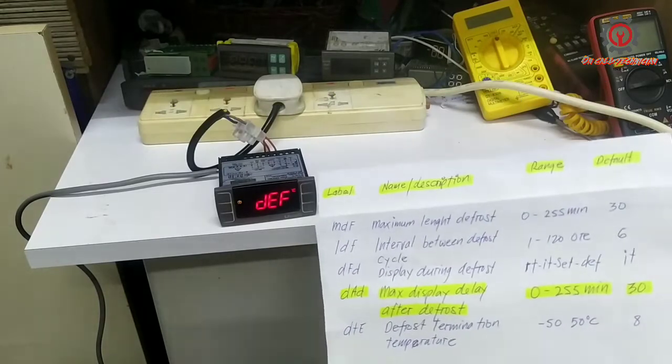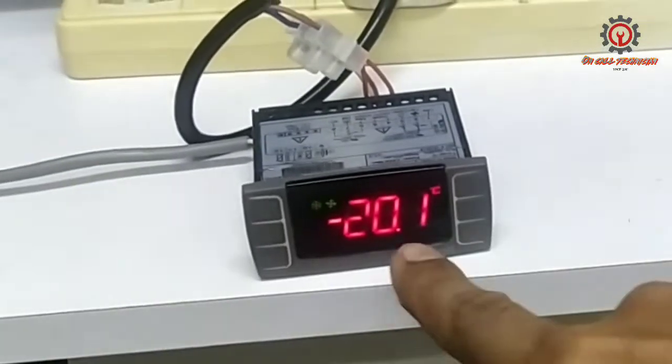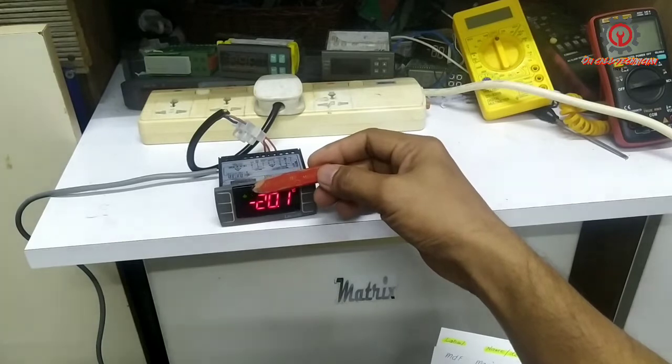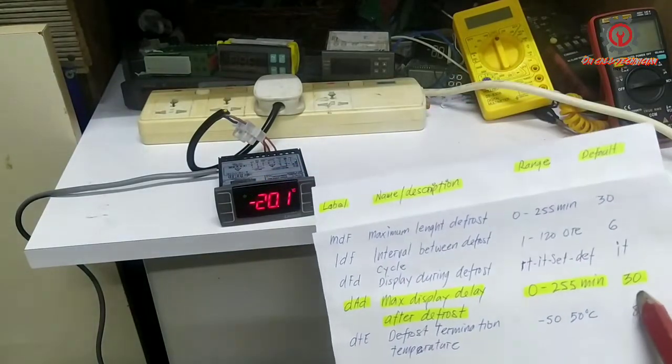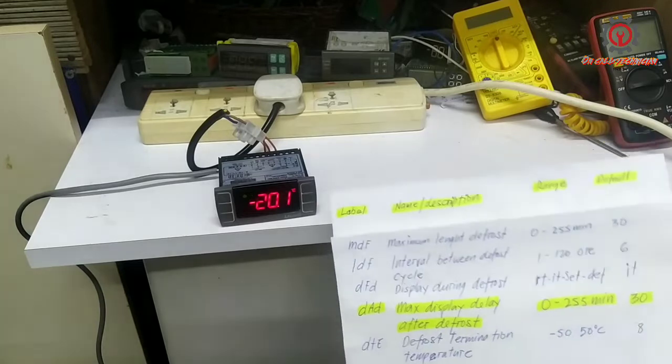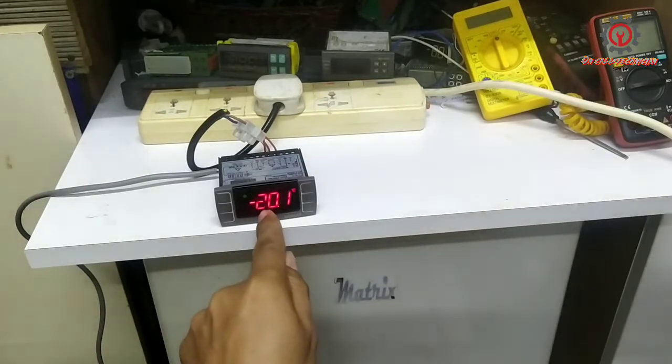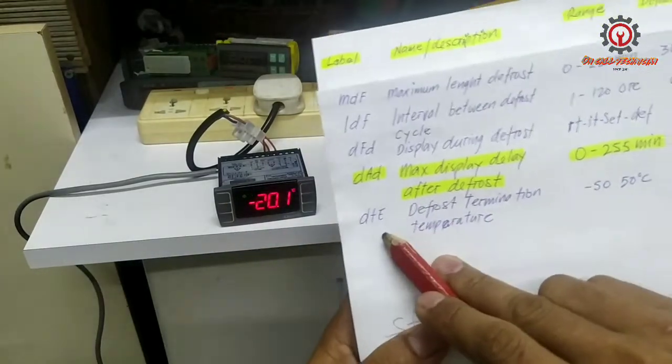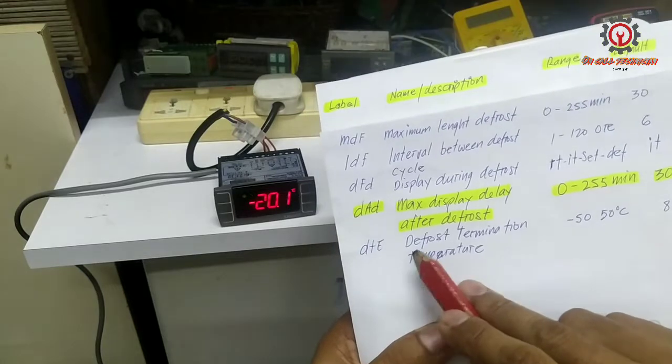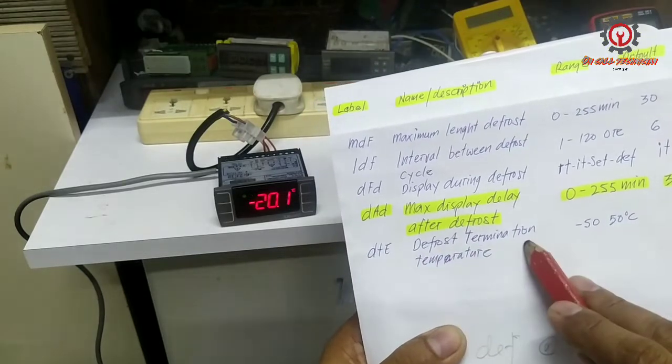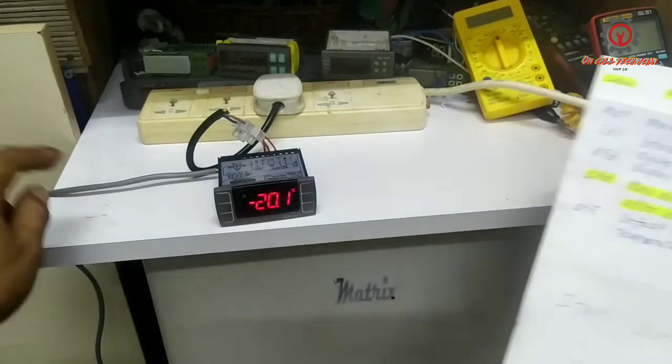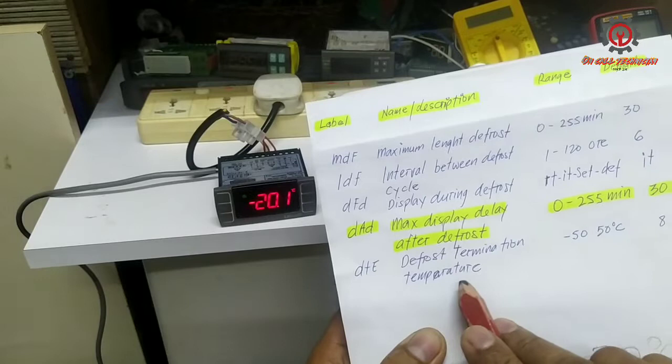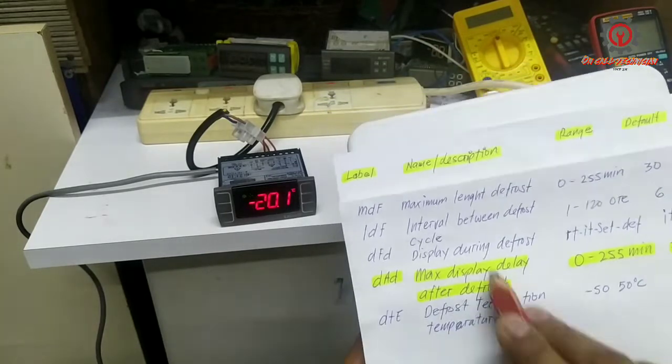Now we have a problem. Take a look - the compressor now starts, followed by fan motor, and it will count 30 minutes. But the problem is this temperature here is not the real temperature because of this DTE. The DTE is defrost termination temperature, but we only use one sensor, therefore this DTE is being performed by time, not by temperature.